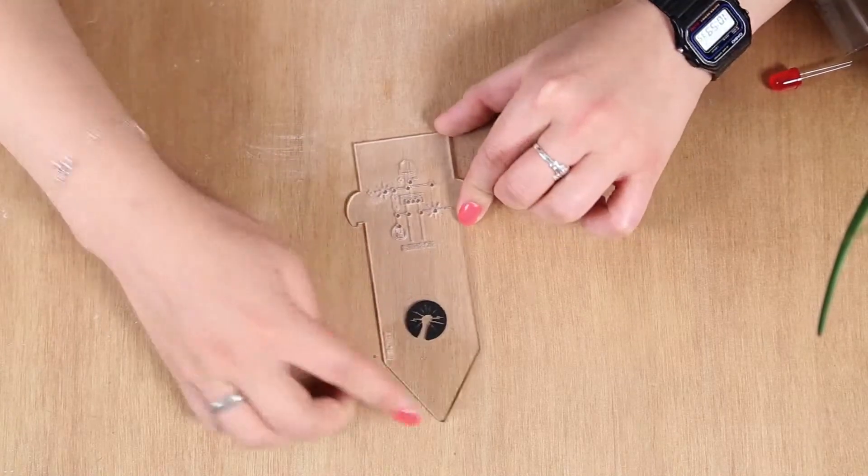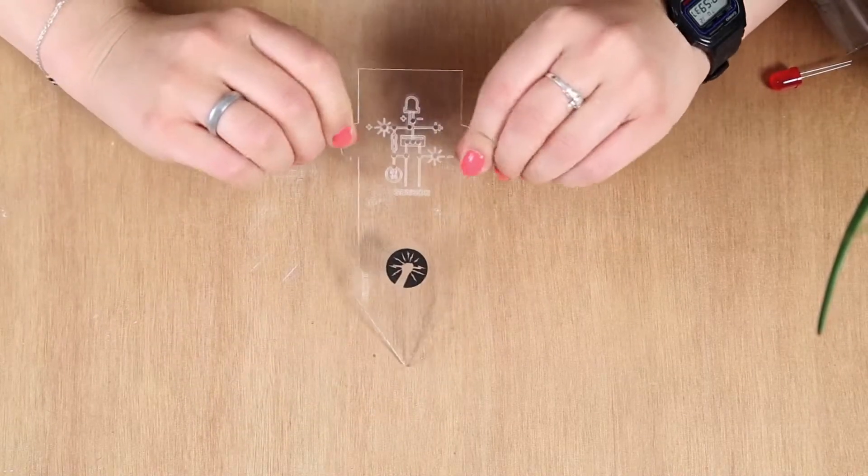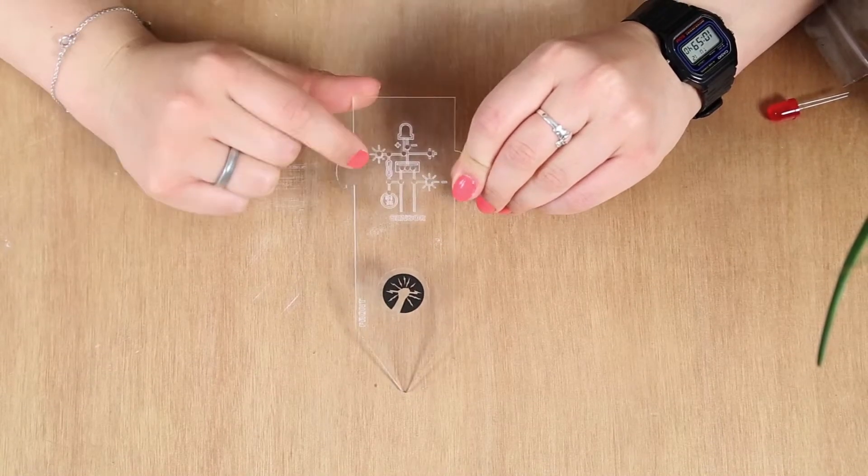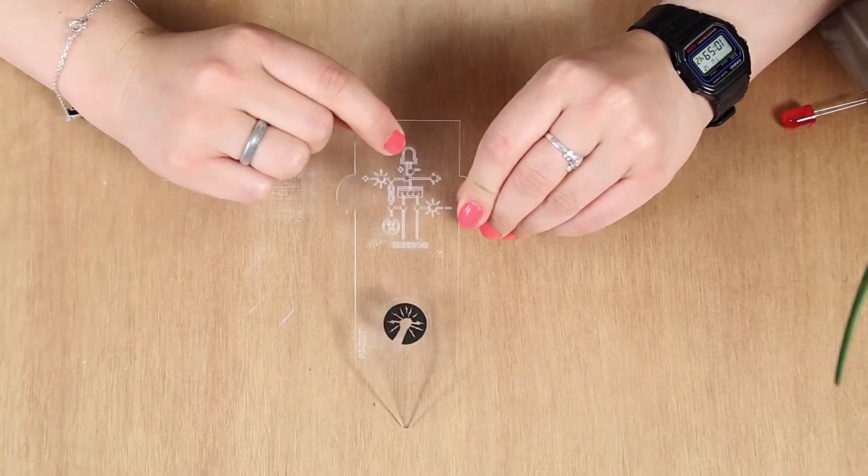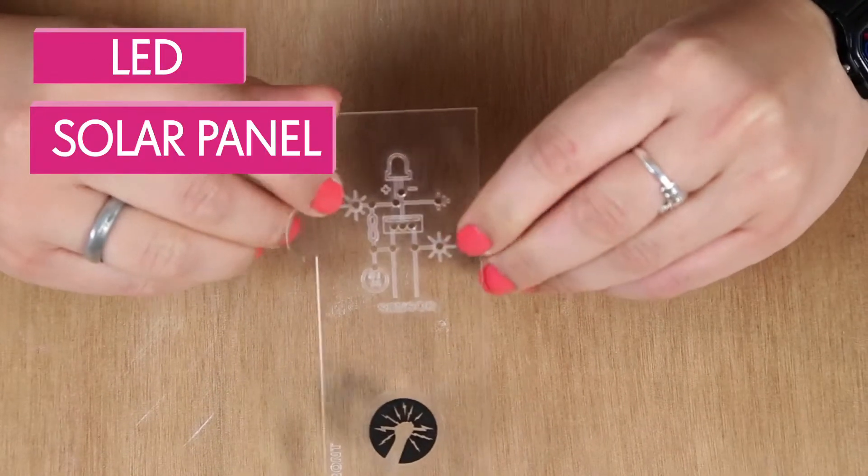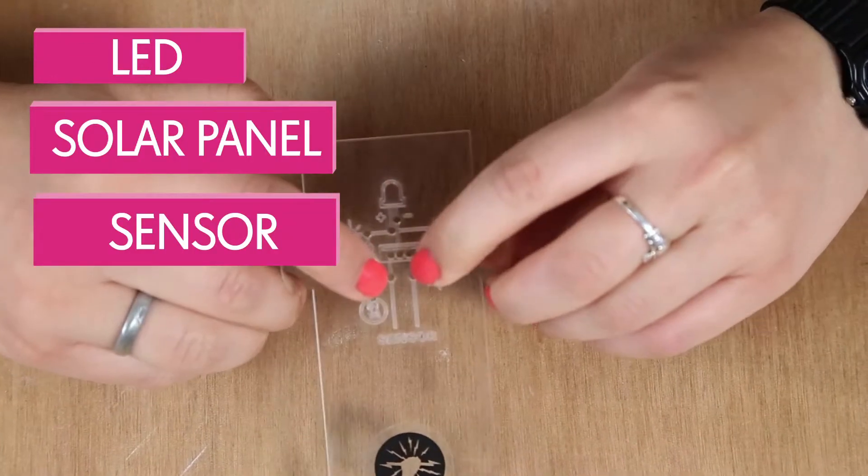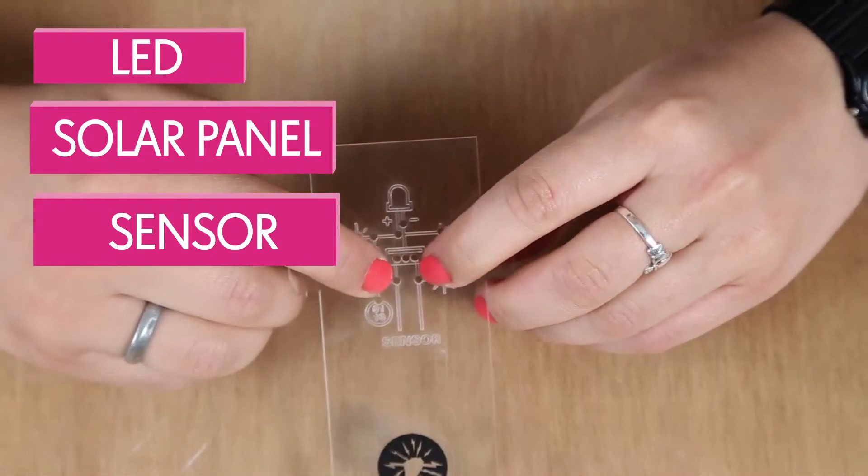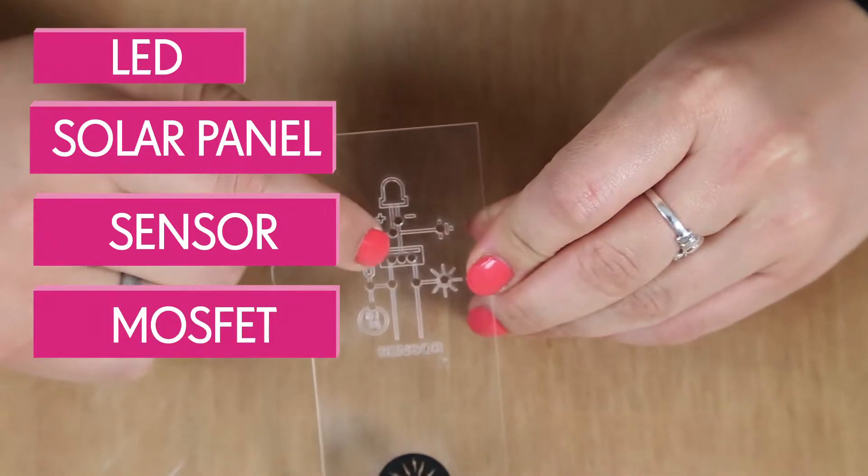So this is the acrylic marker that you get in the box. It has the circuit written on for you and the little symbols symbolize the different components. So this is the LED and this is for the solar panels, these little sun signs. These are for your sensor. So it has sensor and then pointing to these two holes and then a MOSFET.